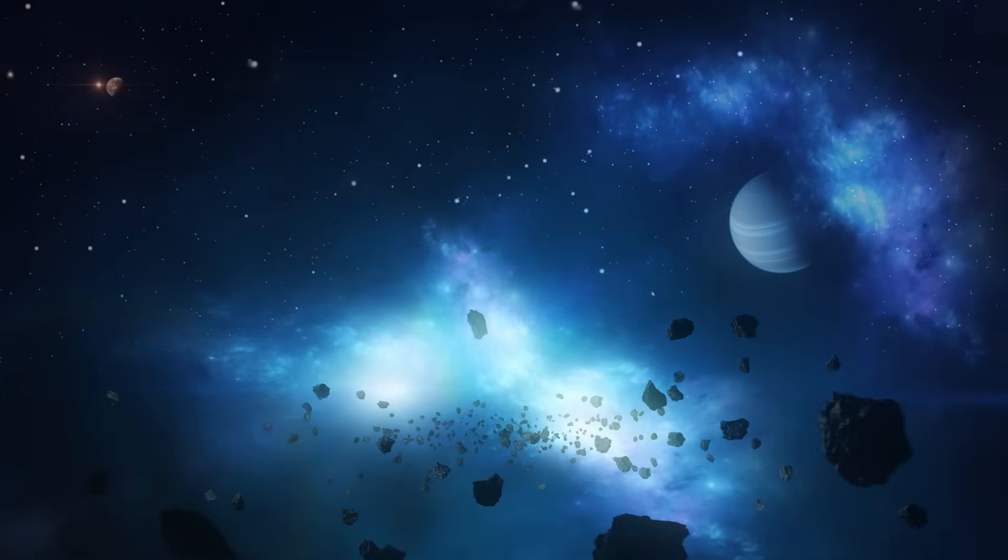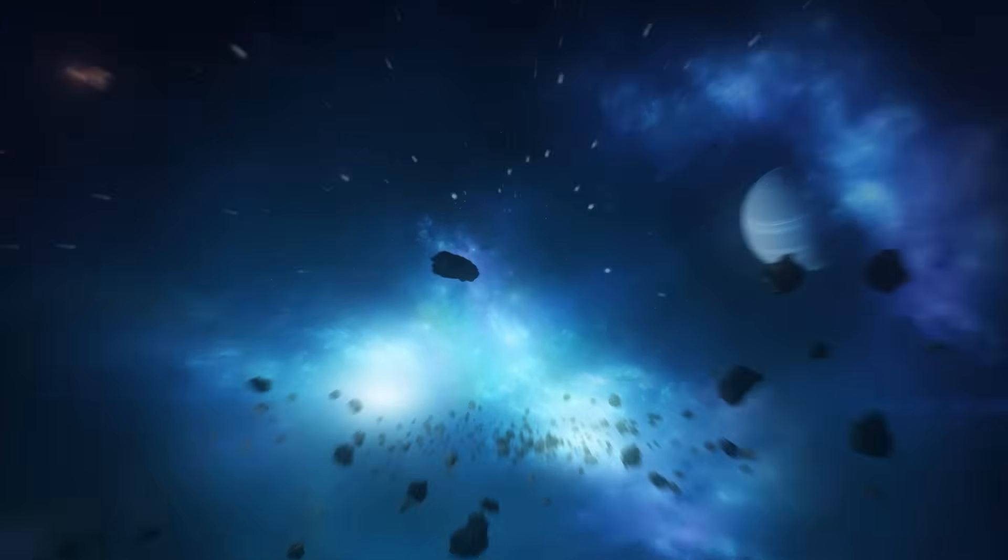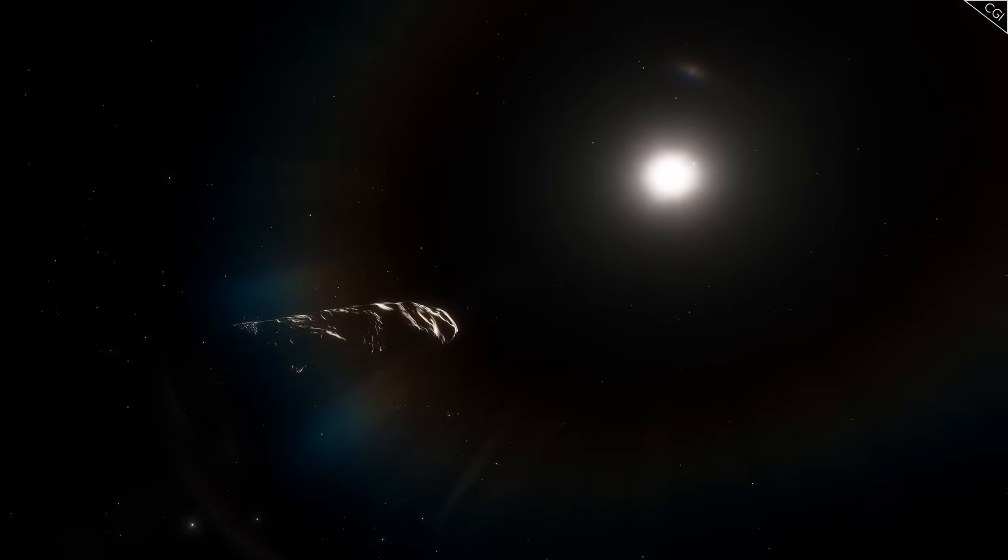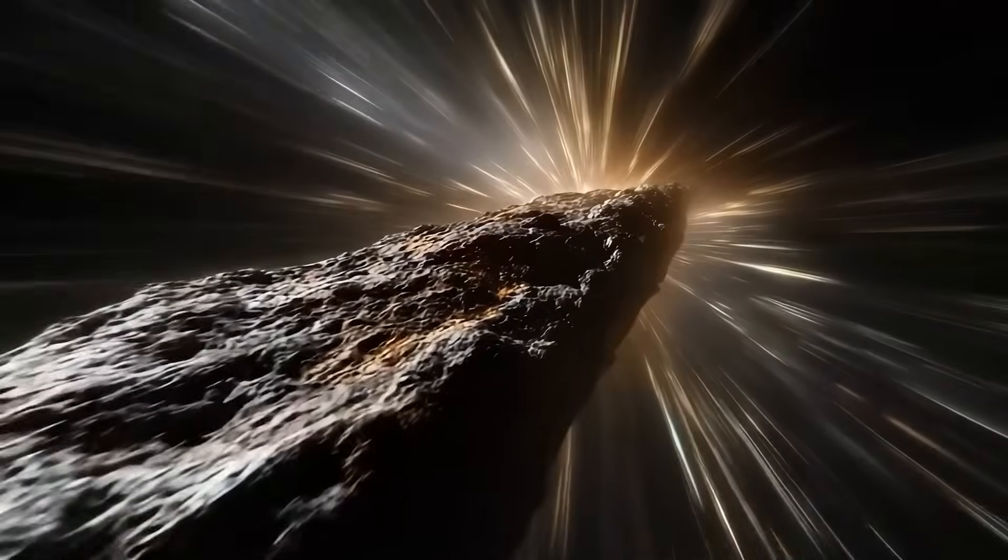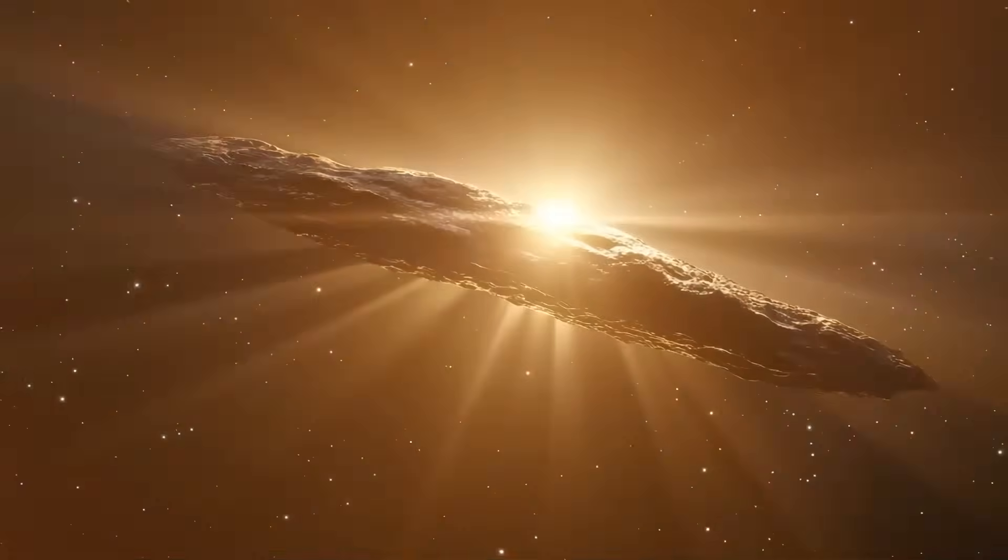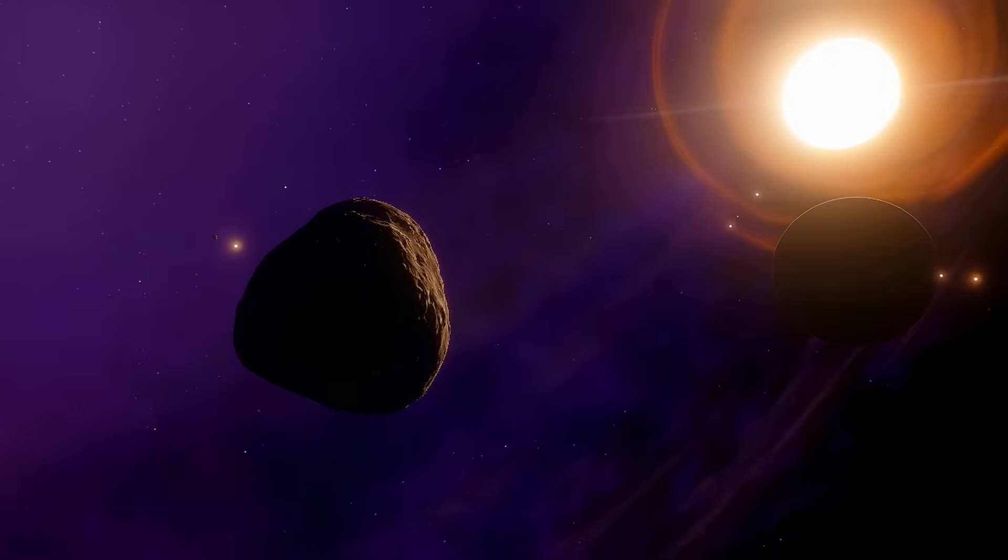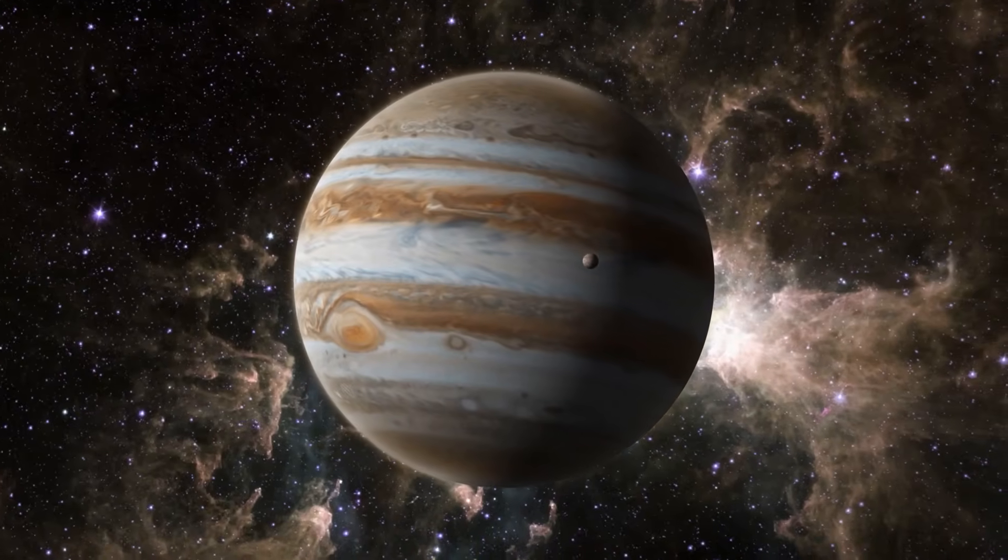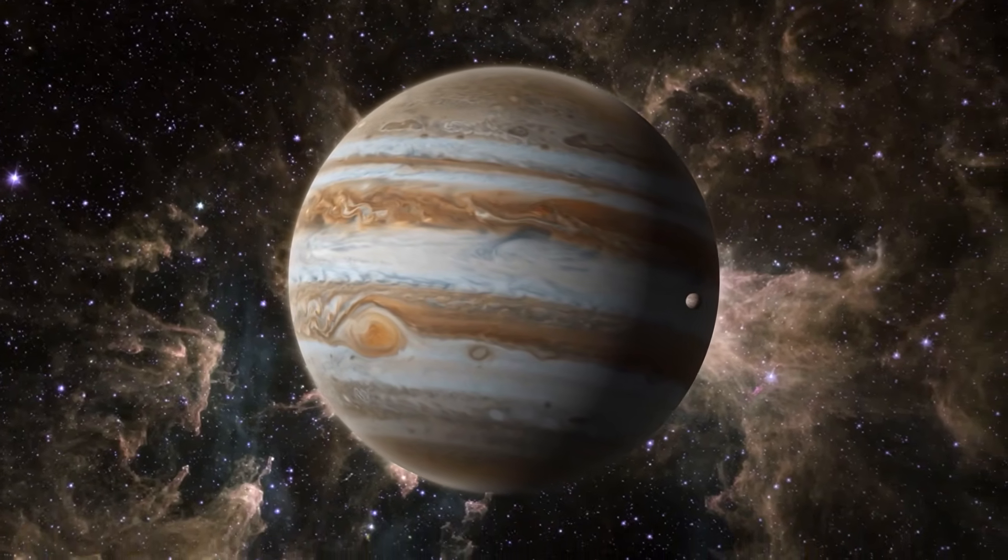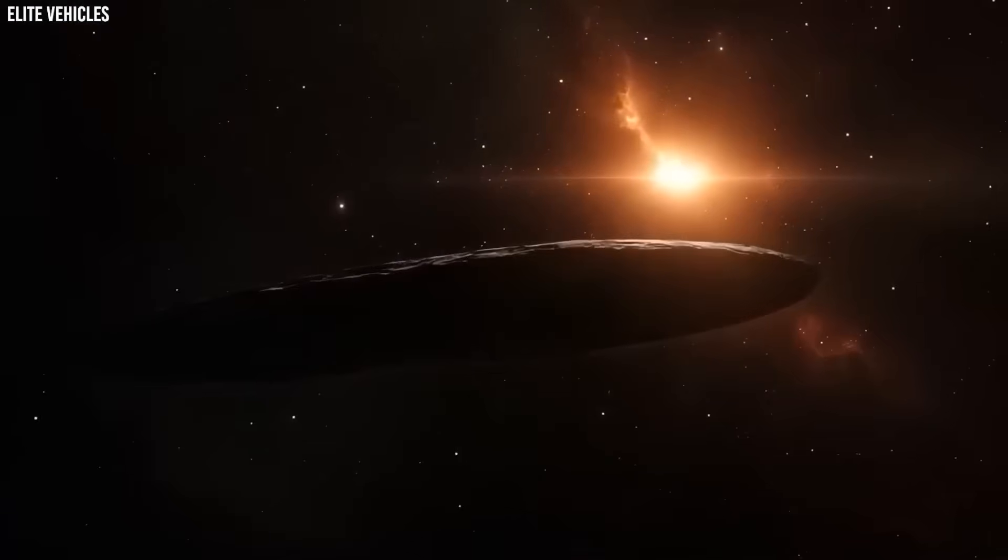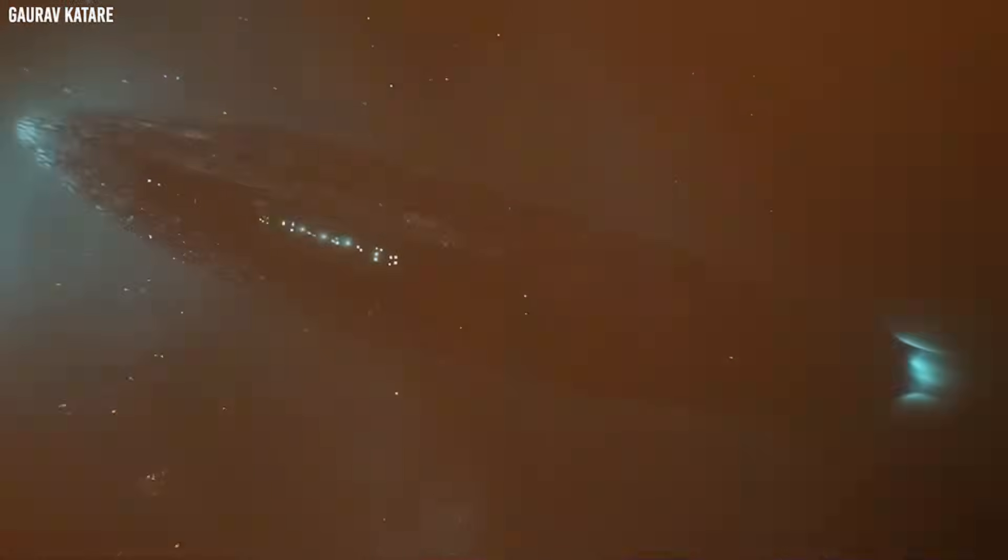Yet here they are, floating before us, demanding to be assembled. Now, we are going to dive into the story of 3i Atlas, its survival, its impossible navigational precision, and why some scientists, including Avi Loeb, believe that what we're witnessing may not be random at all. By the end of this video, you might see Jupiter not as a planet waiting silently in the dark, but as a destination, and 3i Atlas not as a comet, but as a messenger.